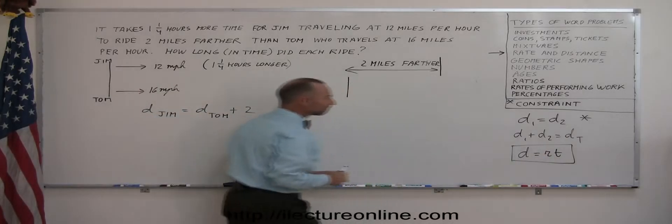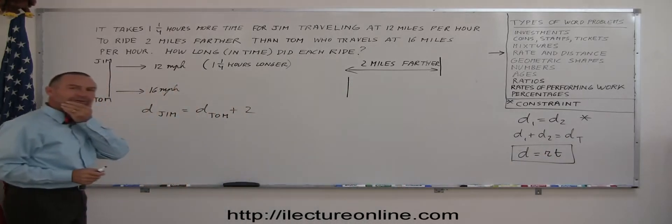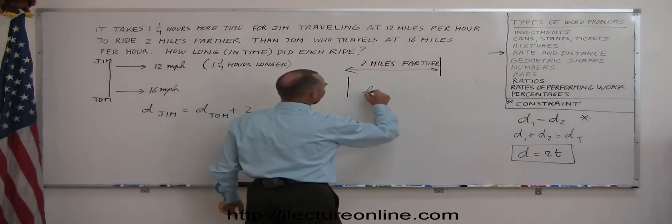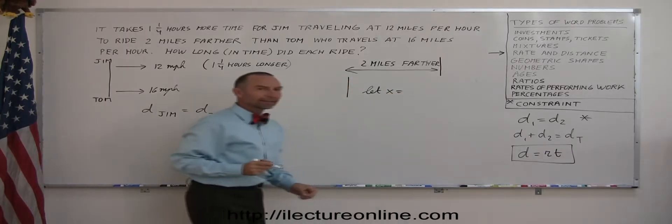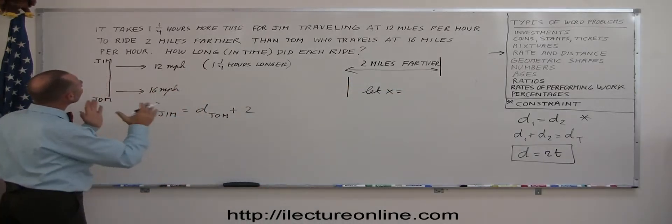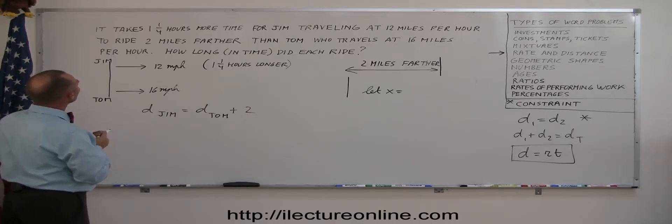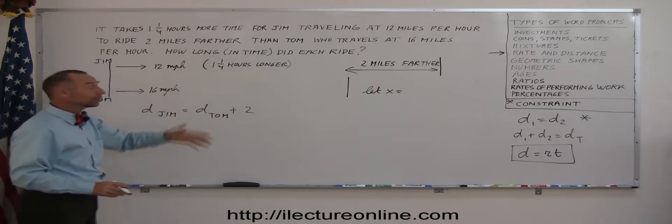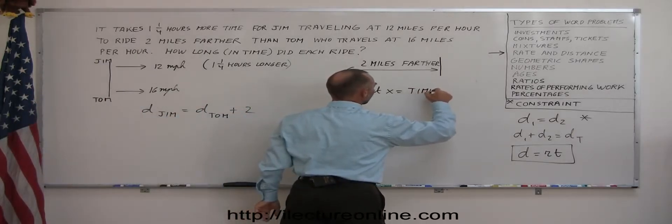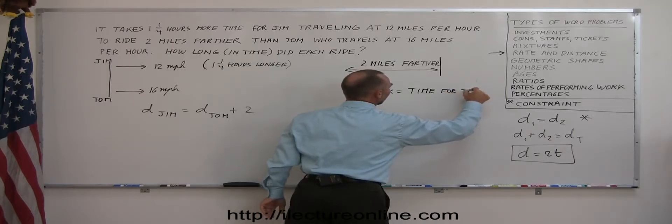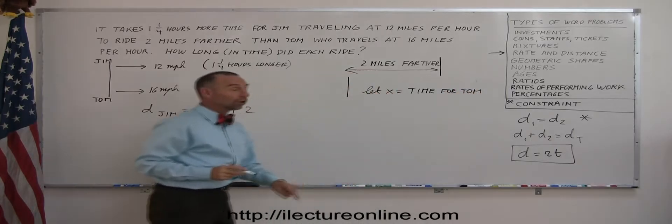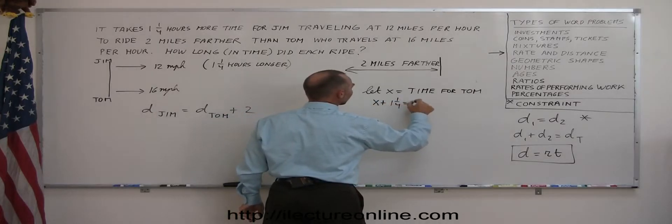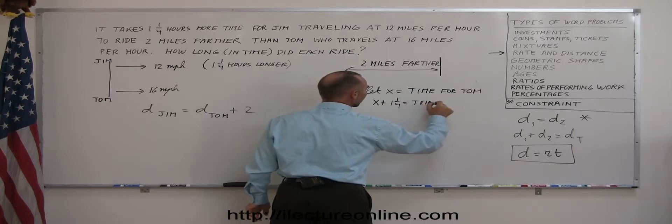So at first sight, when you look at this and go, well, I'm really stuck here. I don't know where to go. But remember, we are told that Jim travels two miles farther than Tom. Which means the distance of Jim plus two miles equals the distance of Tom. That you can do. Alright, so now we have an equation that's kind of like that first one. Now we can plug in what these things are equal to.